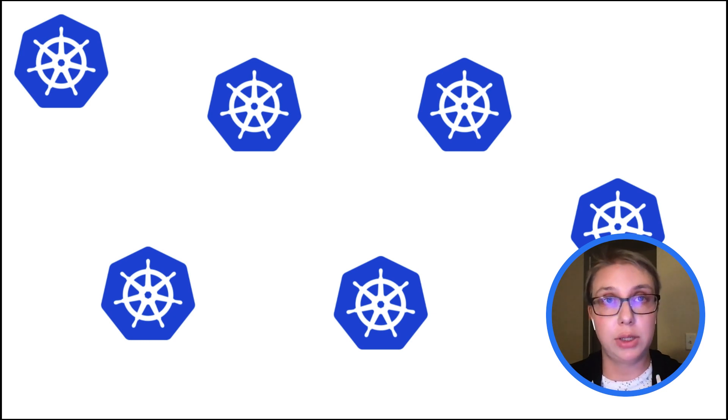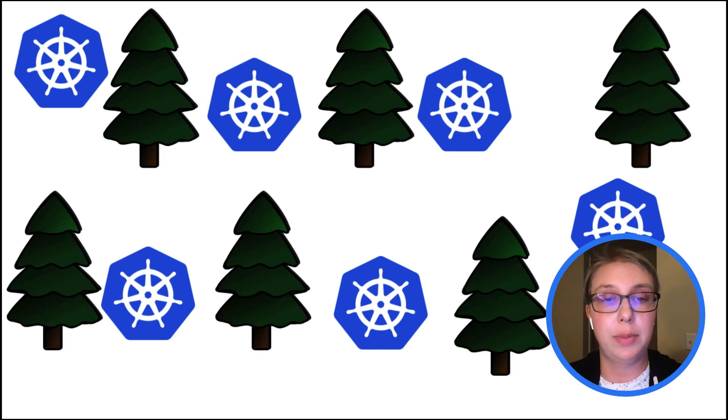So when you have workloads split onto different clusters, normal Kubernetes today doesn't automatically know how to network between them. It's like the workload on one of these clusters is impossibly far over the ocean from the workload in another cluster to even talk to each other. Another way to think about it is that you're in a dark forest full of trees and your workloads are spread out around and you have no compass or any navigational tool to find them.